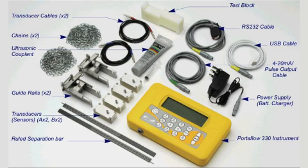Each Micronix portable flow meter has a dedicated case that contains the following: the Micronix flow meter, either one or two sets of sensors depending on the model, a set of guide rails, grease, a set of cables, chains to attach the guide rails, and a charger.